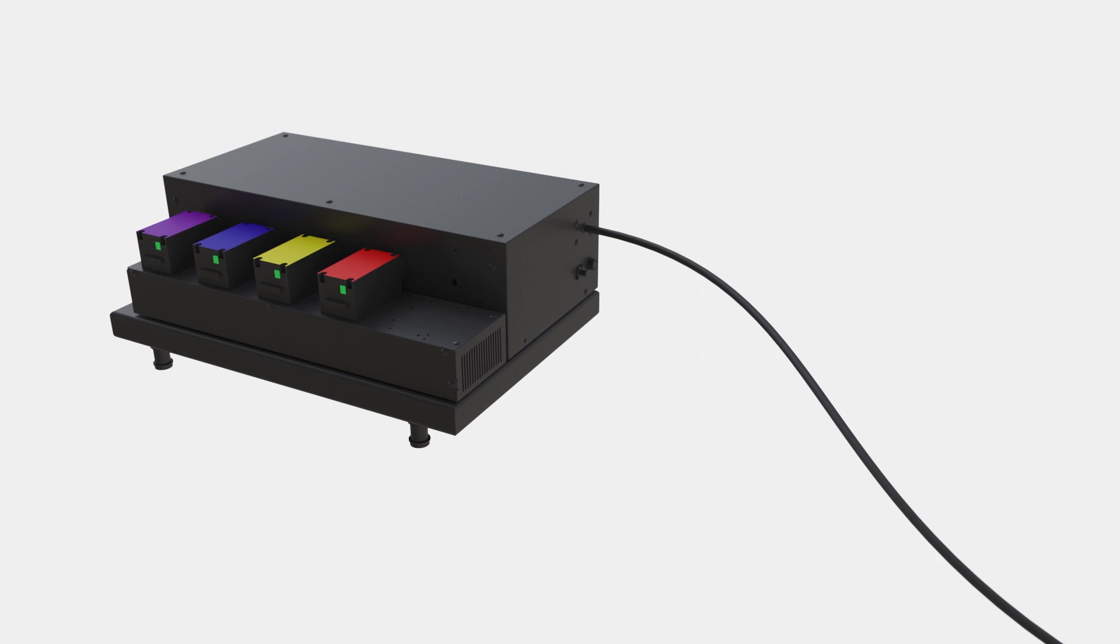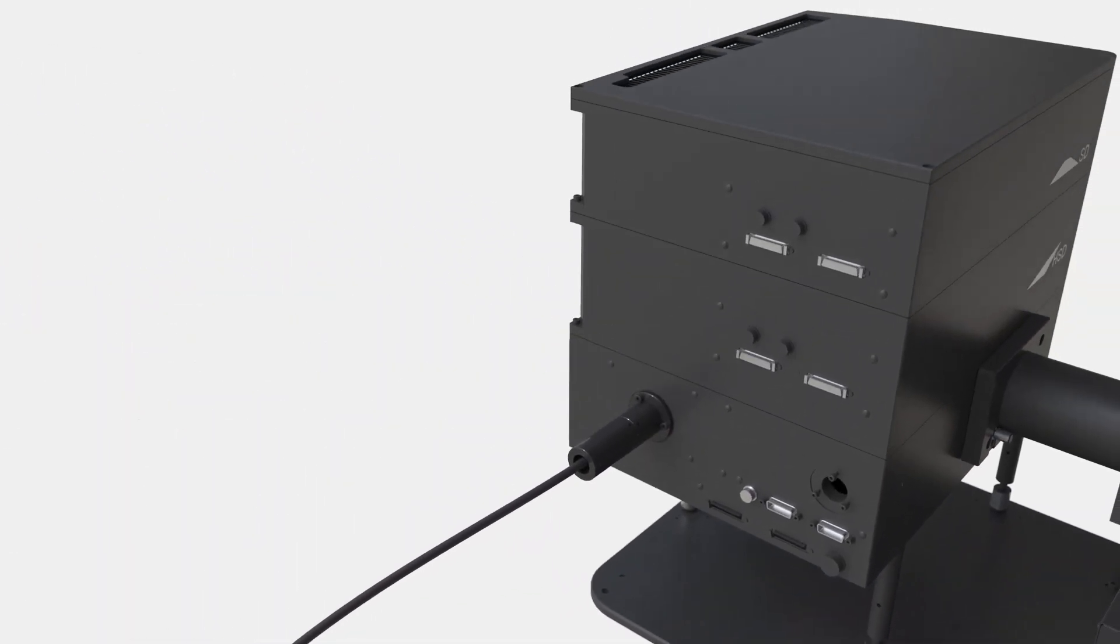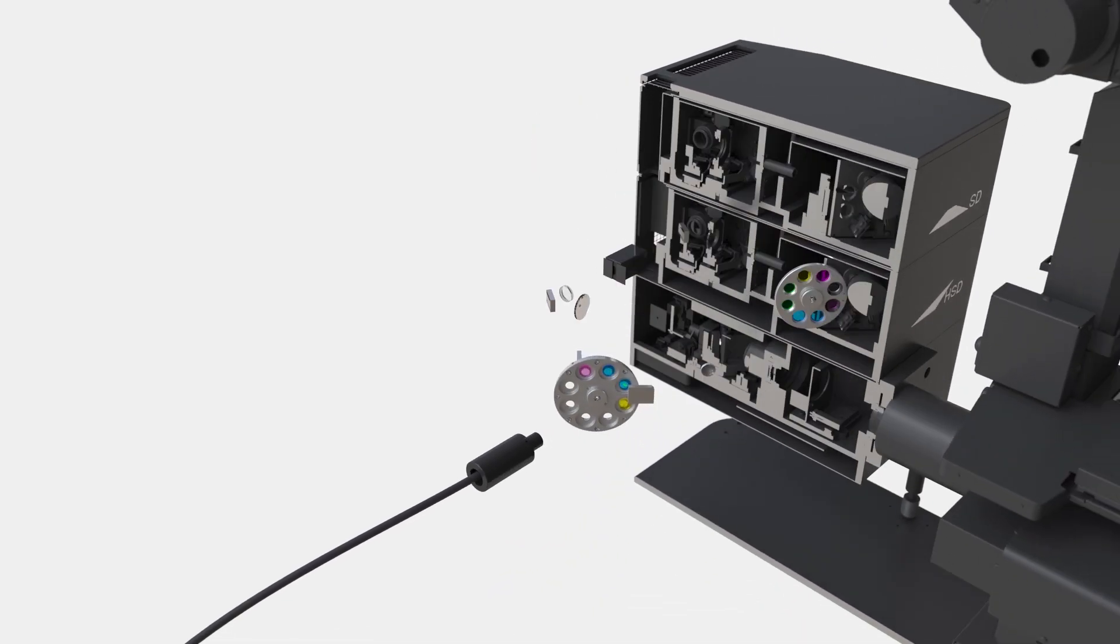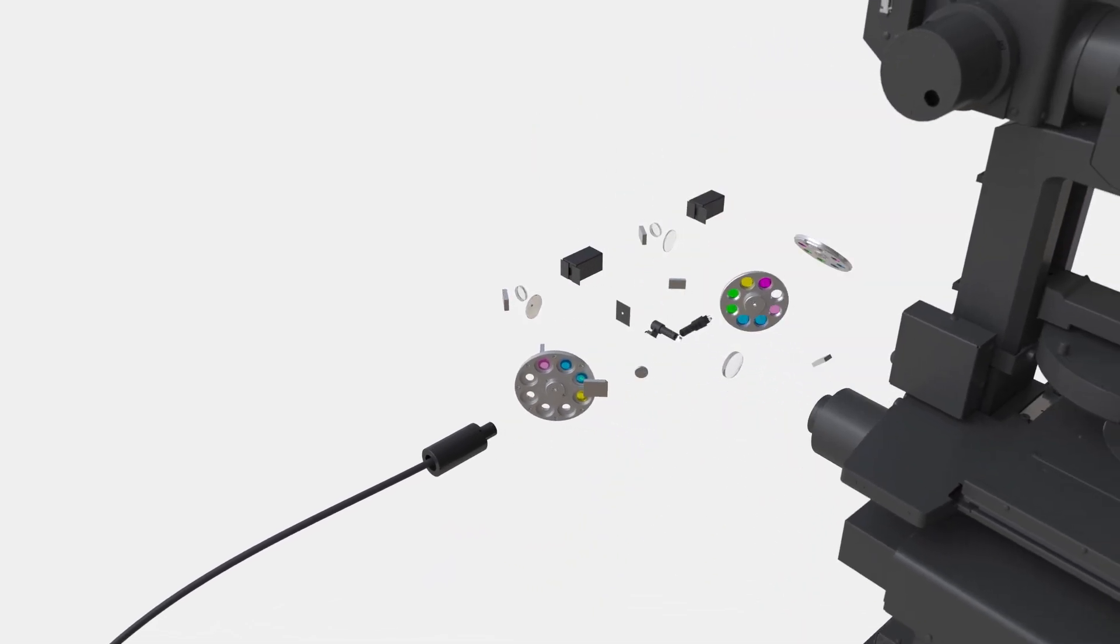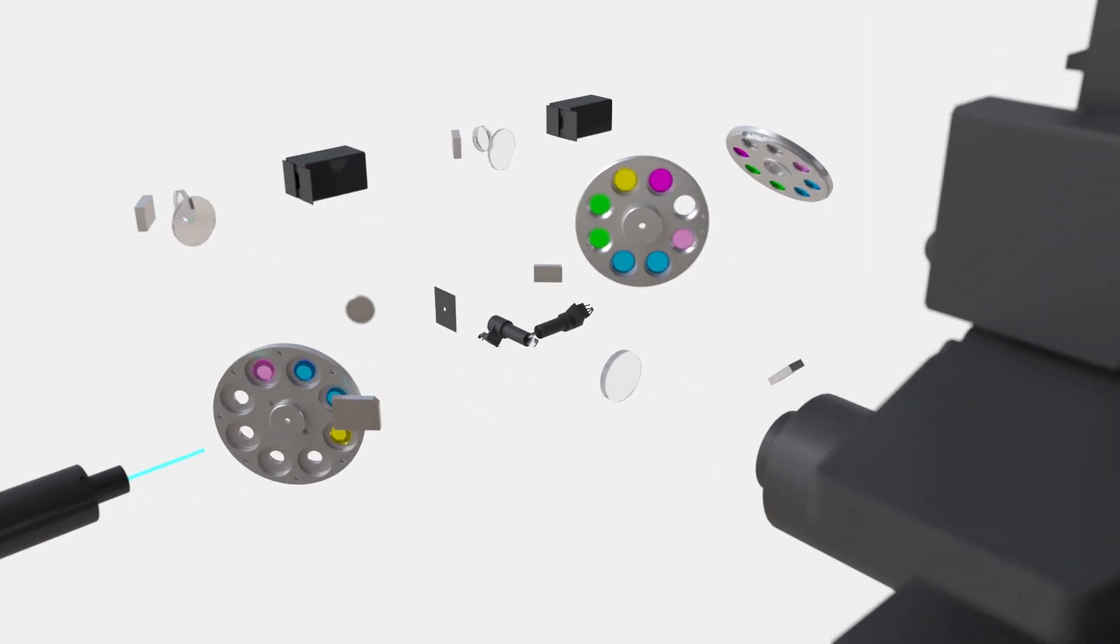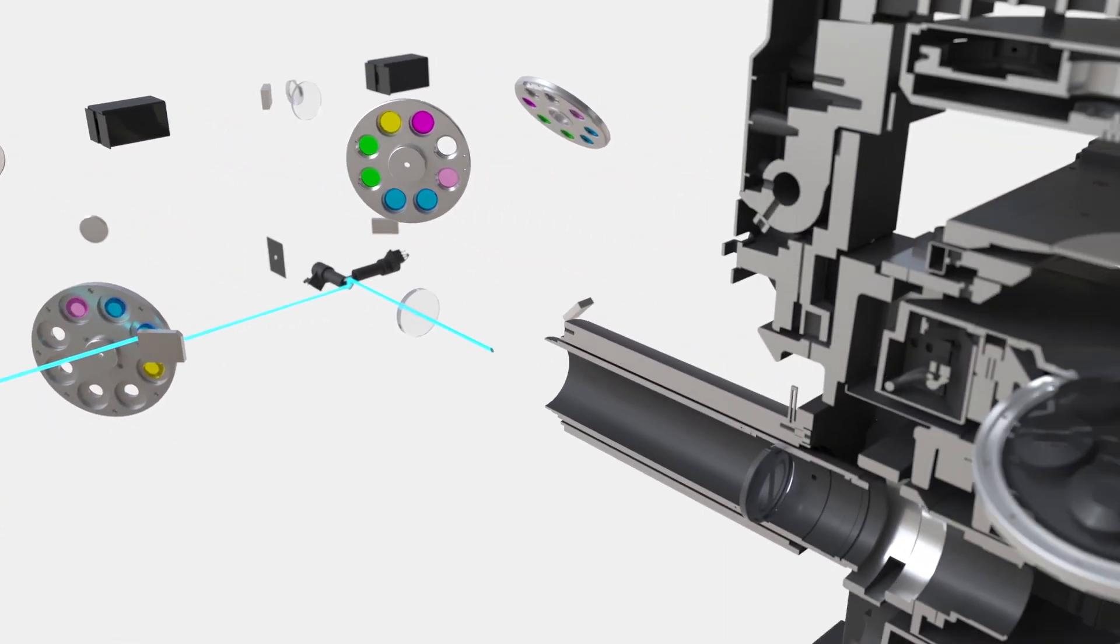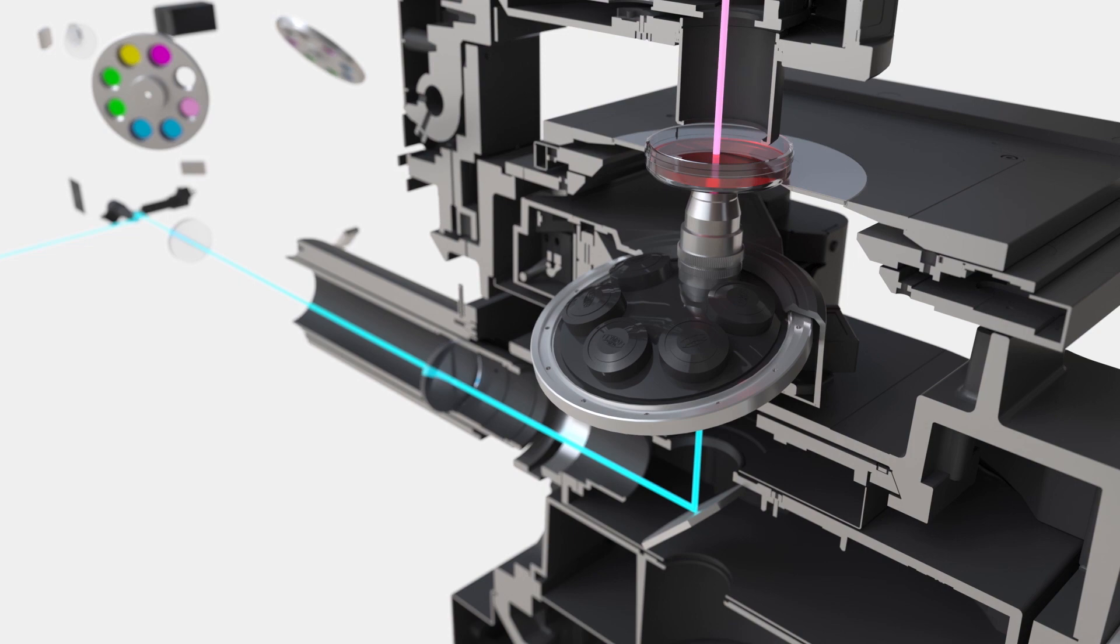The FV3000 microscope has an all-diode suite of lasers featuring up to seven individual laser lines from 405 to 640 nanometers. Inside the scanner, the excitation laser beam is guided to the sample by the excitation dichroic and silver-coated scanning mirrors.